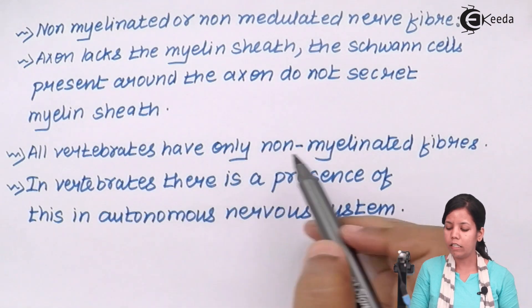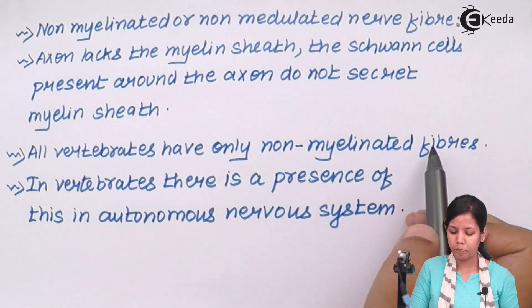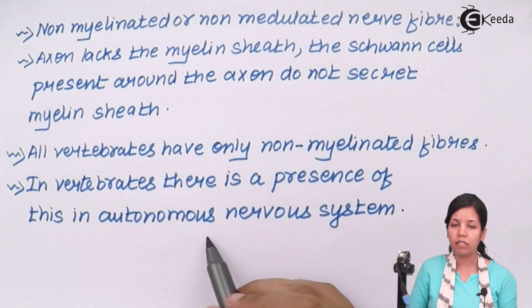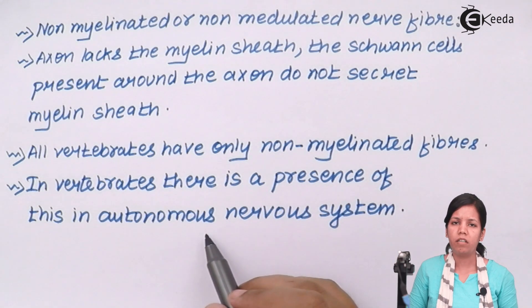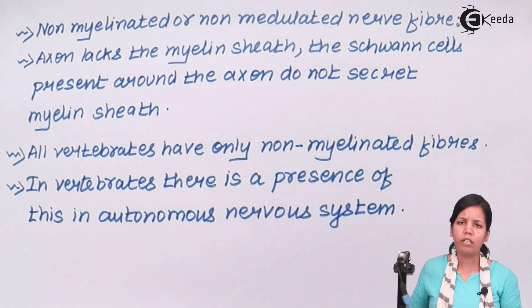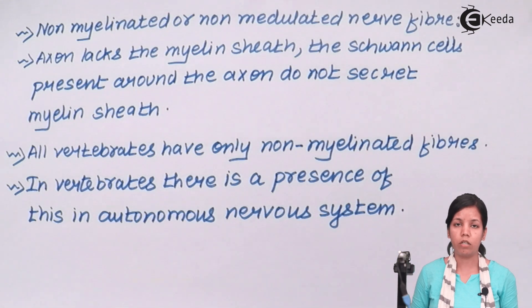All invertebrates have only non-myelinated nerve fibers present in their nervous system. In vertebrates, there is the presence of this sheath in the autonomic nervous system, whereas the peripheral nervous system will not have it — it is only the ANS that consists of it. Depending upon the myelin present or whether it is non-myelinated, axons and Schwann cells interact depending on the situation and how the nerve impulse has to be coordinated.